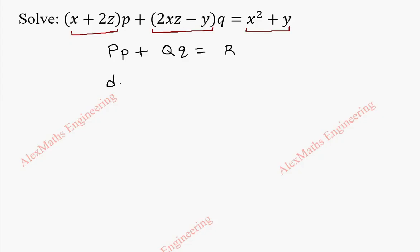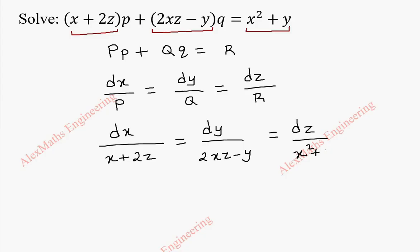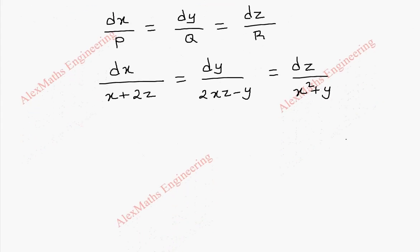To get the solution you have to solve dx/P = dy/Q = dz/R. Now substituting P, Q, R: it is dx/(x + 2z) = dy/(2xz - y) = dz/(x² + y). Now we have to choose the appropriate Lagrange's multiplier to get the solution.